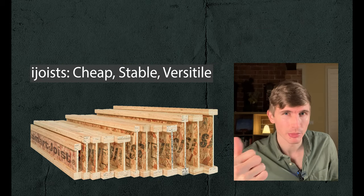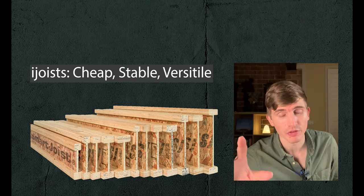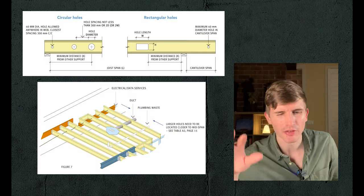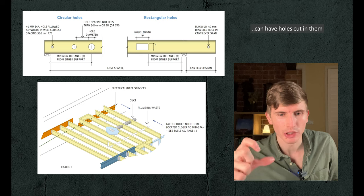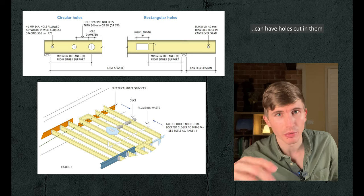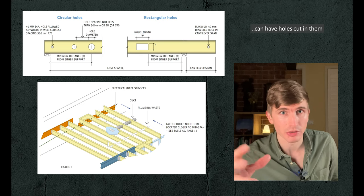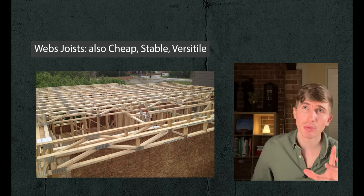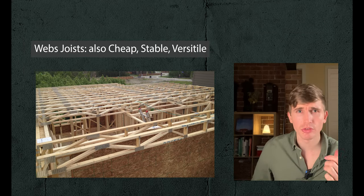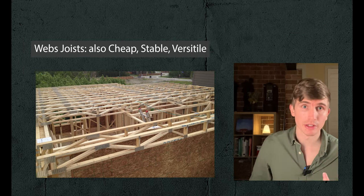i-joists are cheap, stable, very versatile, and can have holes cut in them which utilities can be run through, like ducts and wiring. Open web floor trusses offer similar advantages.